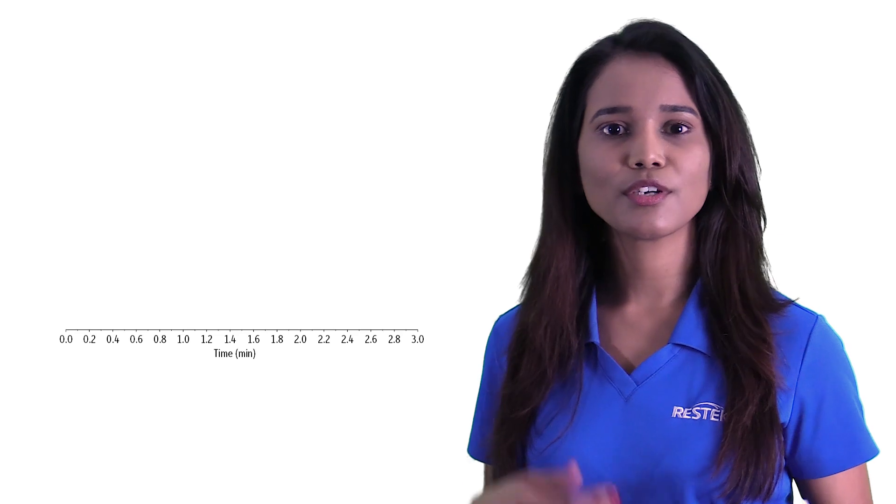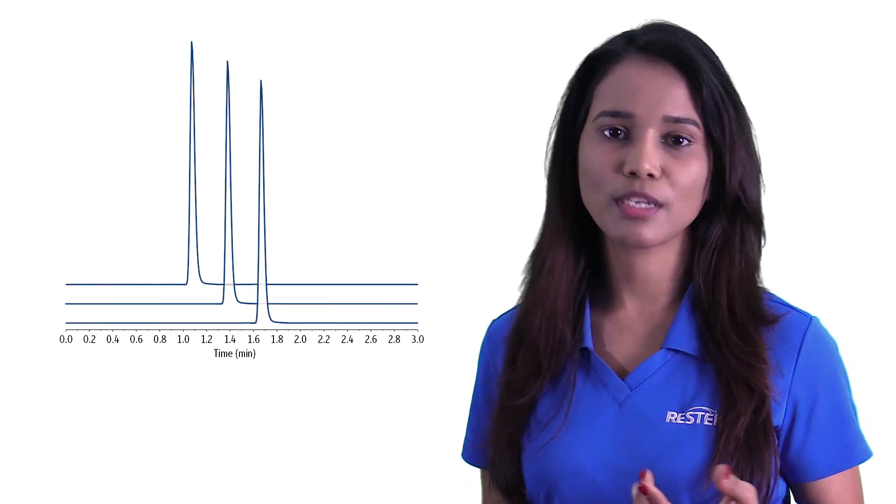Retention times must be reproducible from run to run. When problems occur, late, early, or variable retention times may be observed. Let's say we are doing some liquid chromatography and we start seeing retention time shifts over subsequent runs.